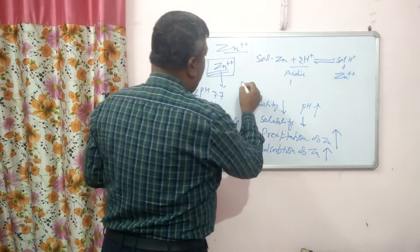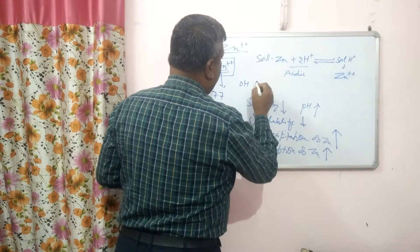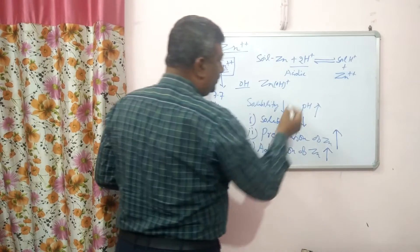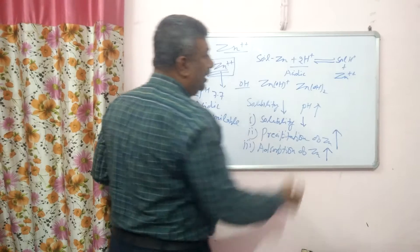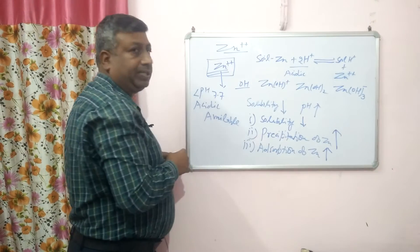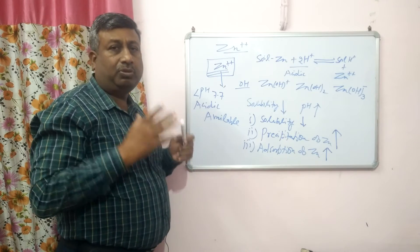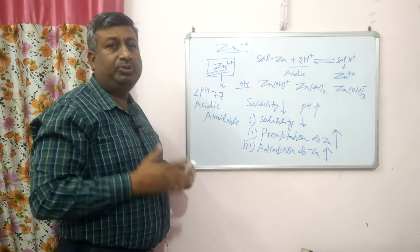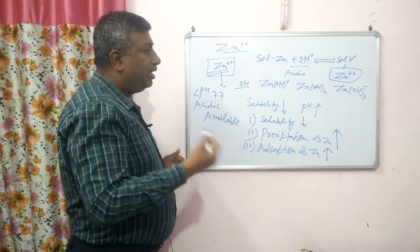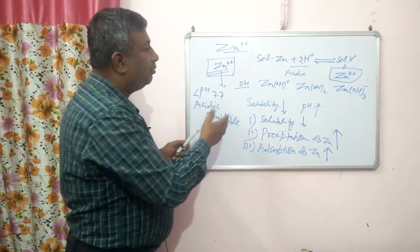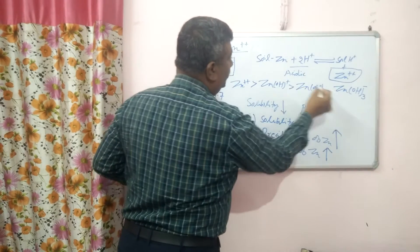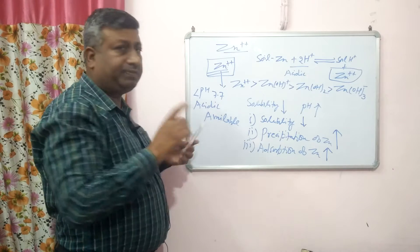As pH is increased, hydroxyl ions increase. Then ZnOH⁺ is formed. As pH increases further, Zn(OH)₂ is present, and at very high pH, Zn(OH)₃⁻ is present. Solubility is the first factor — for any nutrient to be available, it must be soluble.